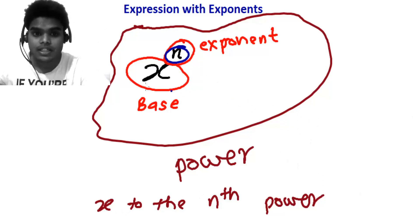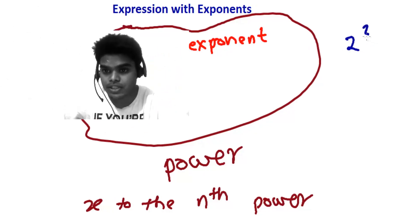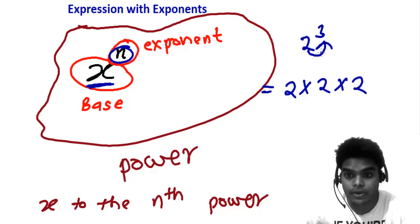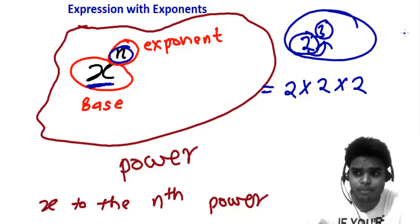This n represents actually the base repeated how many times as a factor. The n represents the number of times this base has been multiplied to itself. Let's say if I have 2 to the 3rd power, then it means the base 2 is multiplied by itself as a factor 3 times - 2 times 2 times 2. This is what means 2 to the 3rd power. Here 3 is exponent, 2 is base and this whole is called power.